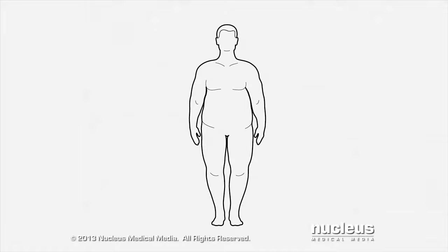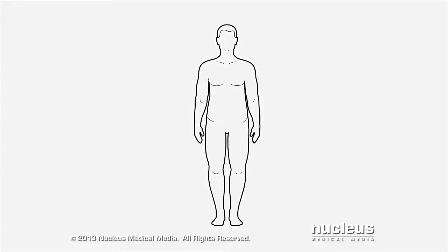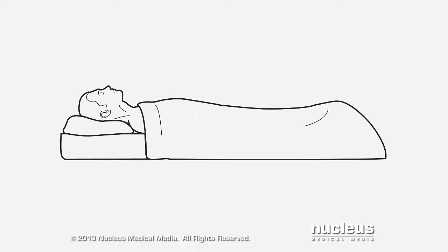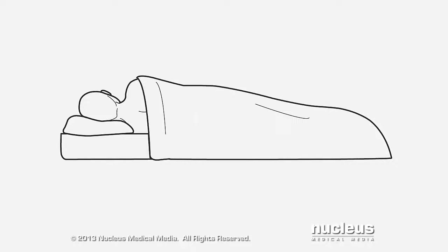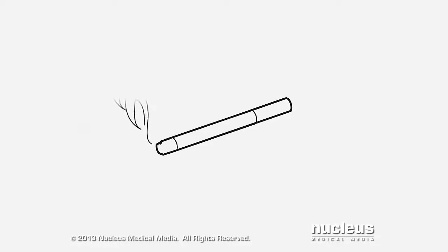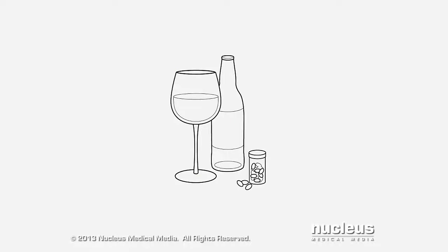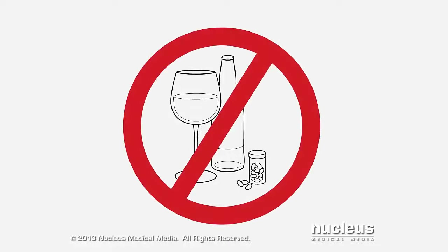Your doctor may recommend lifestyle changes to treat obstructive sleep apnea, including losing weight, sleeping on your side, not smoking, and avoiding substances that can make you sleepy such as alcohol and sedatives.